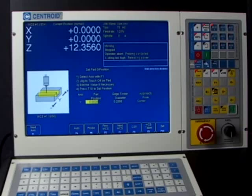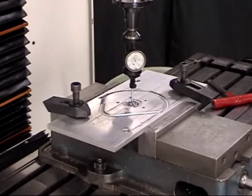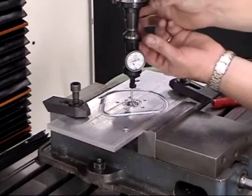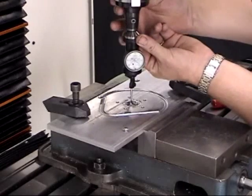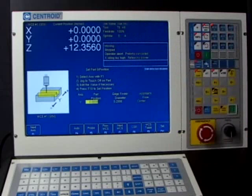You would basically do the same thing with the center finder. You would center find out using the jog buttons. You would get the center finder set perfectly in the center of the circular pocket. And then use the approach from center feature here and make sure it's set to zero and hit F10. It's just the probe's a lot faster. You don't have to spend all the time fiddling with the center finder.